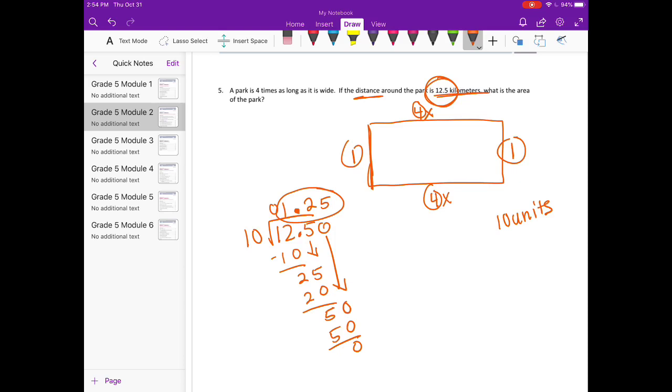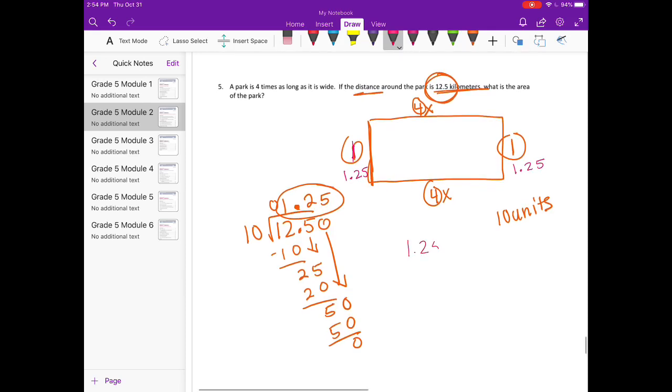So here, this was 1 times what our unit is. So this is 1 and 25 hundredths. This is 1 and 25 hundredths. This would be 4 times 1 and 25 hundredths. And we multiplied by 100 to make it 125. So I'm going to divide that by 100 and get 5. So this is equal to 5. This is equal to 5. And these are 1 and 25 hundredths.